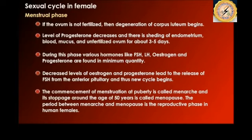The commencement of menstruation at puberty is known as menarche, marking the start of the menstrual cycle. The stoppage of menstruation at around age 50 is known as menopause. These are the various functions and phases of the menstrual cycle.